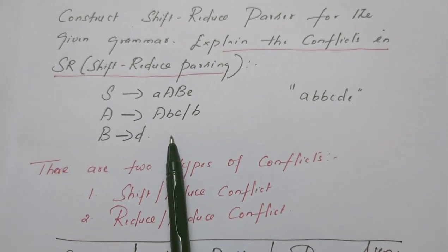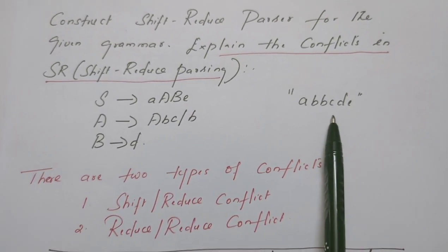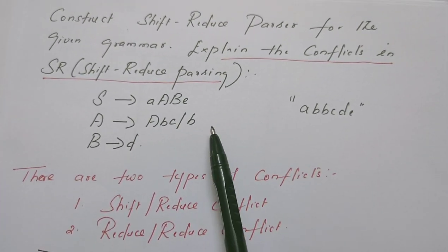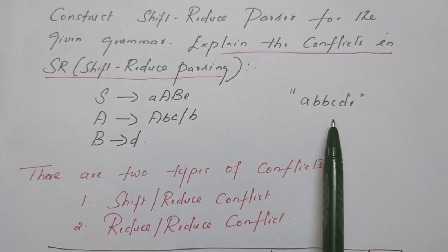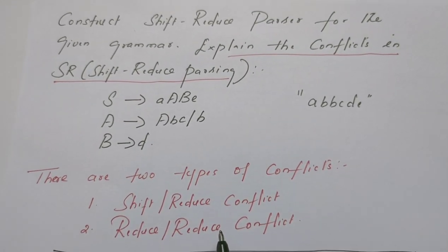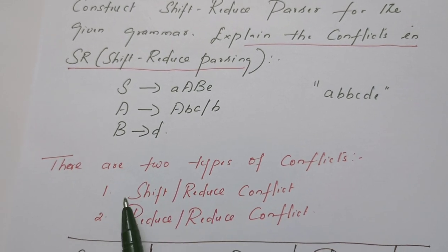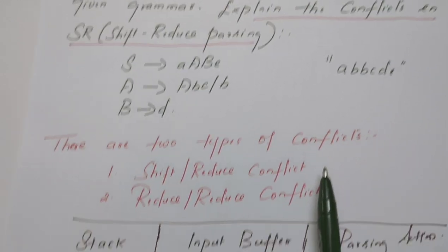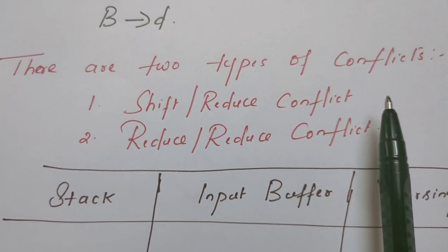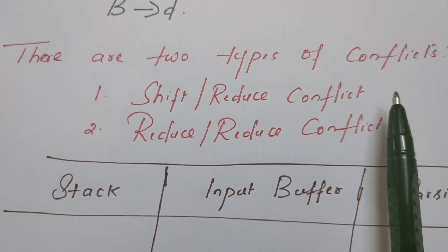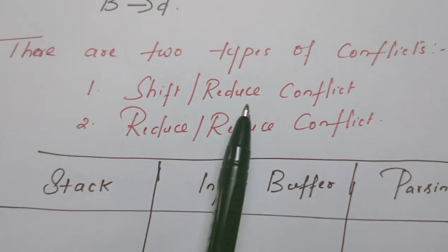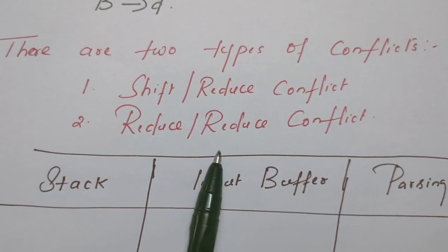This is the given grammar. From the given grammar, we are going to derive the string, and for this grammar we are going to construct the shift-reduce parser which parses this string. Before that, we will discuss the conflicts, then construct the shift-reduce parser. Shift-reduce parser is a bottom-up parser, so the parse tree is constructed from the strings to the root. The two types of conflicts are shift-reduce conflict and reduce-reduce conflict.